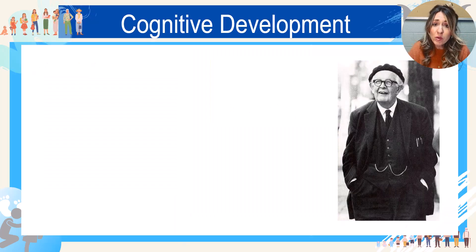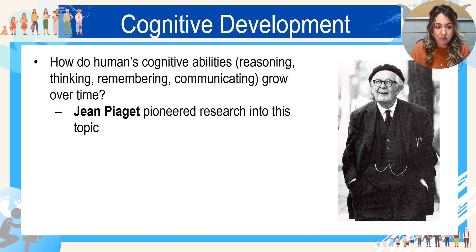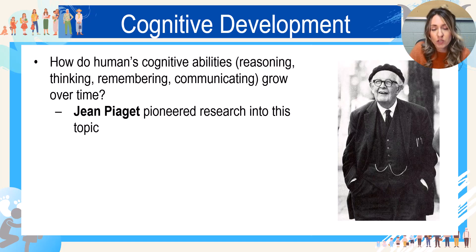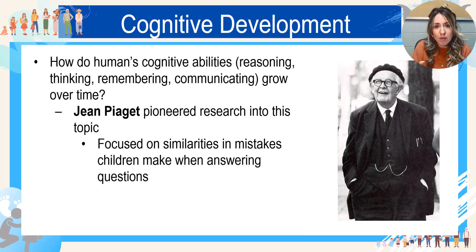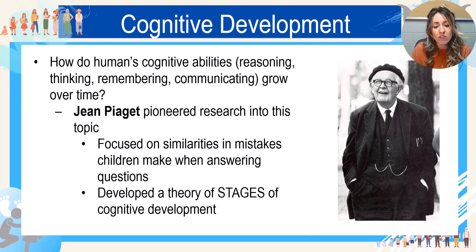The first person we're going to talk about is Piaget. When we think about cognitive development, the question we're really asking is how do humans' cognitive abilities — reasoning, thinking, remembering, communicating — grow over time. Jean Piaget, a French psychologist, pioneered research into this topic. He was actually creating questions for intelligence tests, for IQ testing, for children in France, and he realized that all the children kept making the same mistakes in the same age range. So he started being curious whether those mistakes meant something about the way that they understand and view their perspective on the world, and through testing he developed a theory of stages.